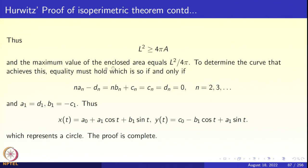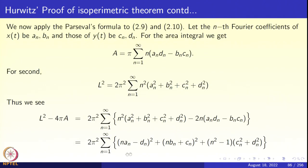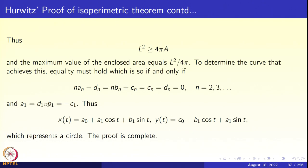Equality holds when all terms in the sum are zero. For n ≥ 2, this forces An = Bn = Cn = Dn = 0. For n = 1, we get A1 = D1 and B1 = −C1. So only the n = 1 terms survive, giving x(t) = A0 + A1·cos(t) + B1·sin(t) and y(t) = C0 − B1·cos(t) + A1·sin(t), which is a circle. The proof is complete.